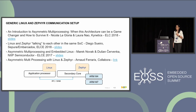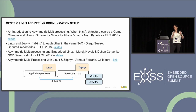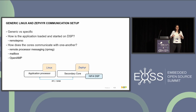For the generic Linux and Zephyr communication setup, there are a lot of discussions and presentations. Most of them focus on communication between two ARM cores — an application processor Cortex-A and a secondary Cortex-M4 or M7 — one running Linux and the other Zephyr. Our scope is to have a secondary core with Xtensa architecture: the HiFi 4 DSP running Zephyr. We also want to move from a specific firmware loader to a generic one.